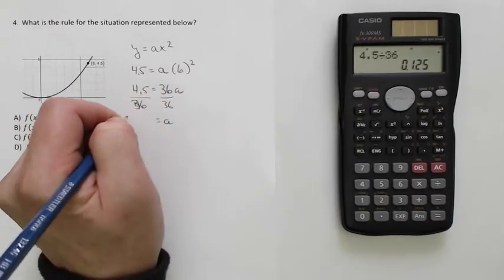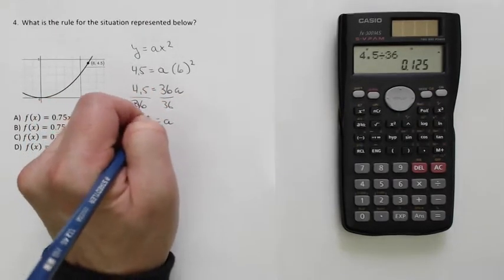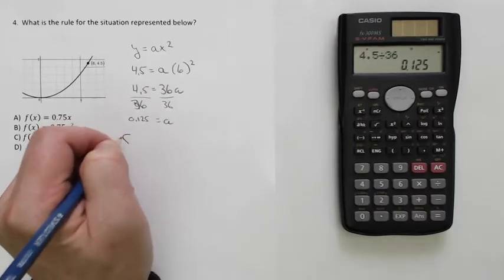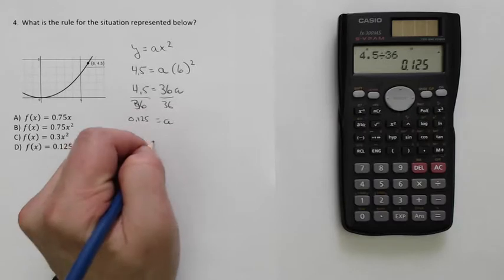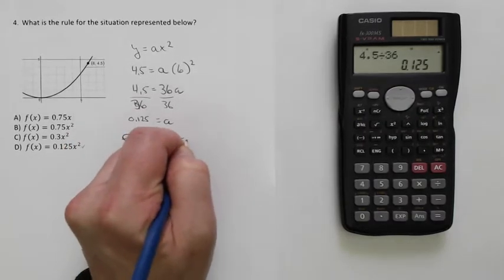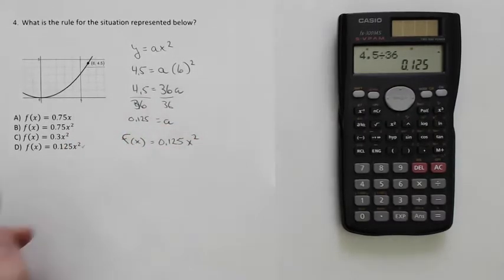So I divided those to get a, and that becomes f(x), since that's the format that they want it in, equals 0.125x squared. D is your answer.